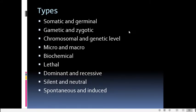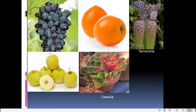Mutations can be classified into different types depending upon various criteria: somatic and germinal; gametic and zygotic; chromosomal and genetic; micro and macro; biochemical; lethal; dominant and recessive; silent and neutral; and spontaneous and induced.